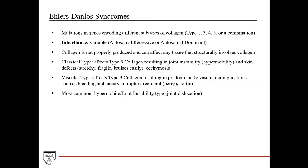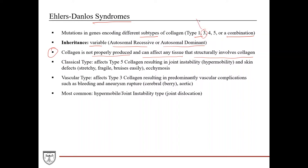Ehlers-Danlos syndromes are a group of syndromes with a common theme of mutations in genes that encode different subtypes of collagen. Depending on which gene is affected — type 1, 3, 4, 5, or a combination — the inheritance is variable, either autosomal recessive or autosomal dominant. The common theme is that collagen is not properly produced, and since that type of collagen affects any tissue it's a structural component of, clinical symptoms result accordingly.